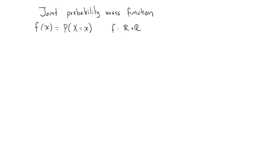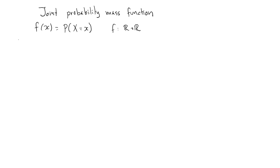The corresponding concept when dealing with several discrete random variables is called the joint probability mass function. If we have n discrete random variables x1, x2, and so on up to xn, then we define the joint PMF as a function from Rⁿ to [0,1]. It is a function of n variables x1 through xn, defined as the probability that x1 takes value x1, x2 takes value x2, and so on through xn. Each xi is a real number, so the domain of f is Rⁿ.